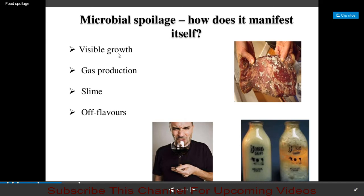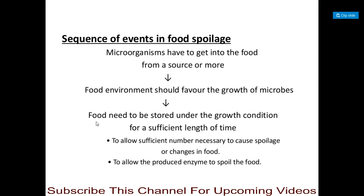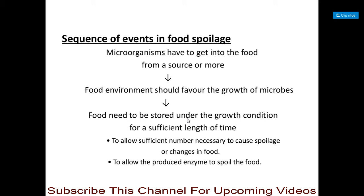Microbial spoilage manifests as visible growth, gas production, slime formation, or off-flavors. The sequence of events in food spoilage is: microorganisms must first enter the food from a source; the food environment must favor microbial growth; and the food must be stored under growth conditions for a sufficient length of time to allow enough microorganisms to cause spoilage or produce enzymes that spoil the food.